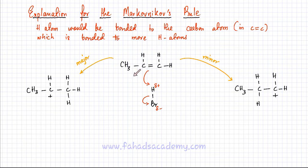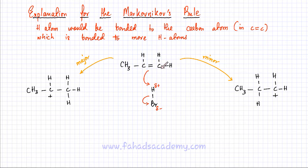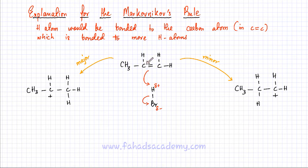I have an unsymmetric alkene, which is propene in this case. It's unsymmetric because the arrangement of atoms around the double-bonded carbon is different. On the right-hand side, there are two hydrogen atoms, and on the left-hand side, there is a carbon chain.